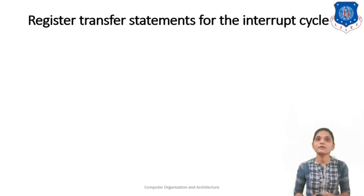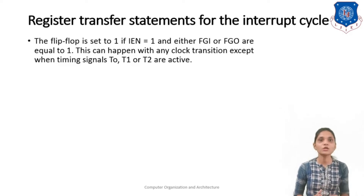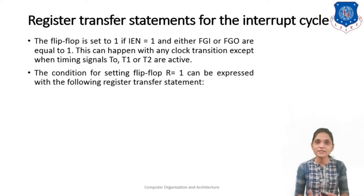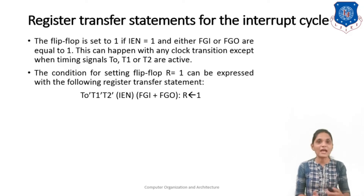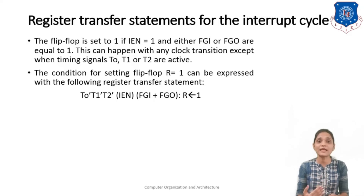Next we will see the register transfer statements for the interrupt cycle. The flip-flop R is set to 1 if IEN is 1 and either FGI or FGO equals 1, and this happens with any clock transition except when timing signals T0, T1, or T2 are activated, because at T0, T1, and T2 we are fetching and decoding the instruction. So except at those timing signals, if IEN is 1 and FGO or FGI is 1, you have to activate the R flag. This whole condition, using OR operation indicated by the plus sign, sets R to 1, meaning your next cycle will be the interrupt cycle.